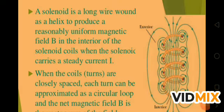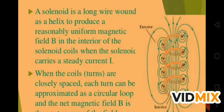A solenoid is a long wire wound as a helix to produce a reasonably uniform magnetic field. The symbol of magnetic field is B. In the interior of the solenoid coil, when the solenoid carries a steady current I, a uniform magnetic field is produced.